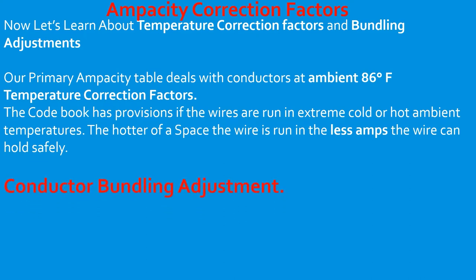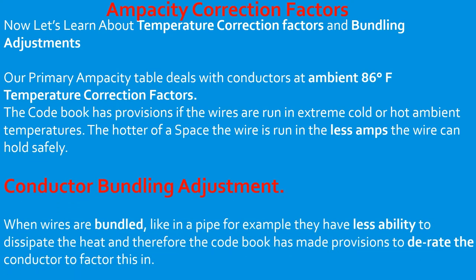Now let's look at conductor bundling adjustment. When wires are bundled — like in a pipe — they have less ability to dissipate that heat. Therefore, the codebook has made provisions to de-rate the conductors to factor this in. If we have a lot of wires jammed in a pipe, they're going to have less ability to dissipate the heat from the amperage, so they're allowed to handle fewer amps safely.